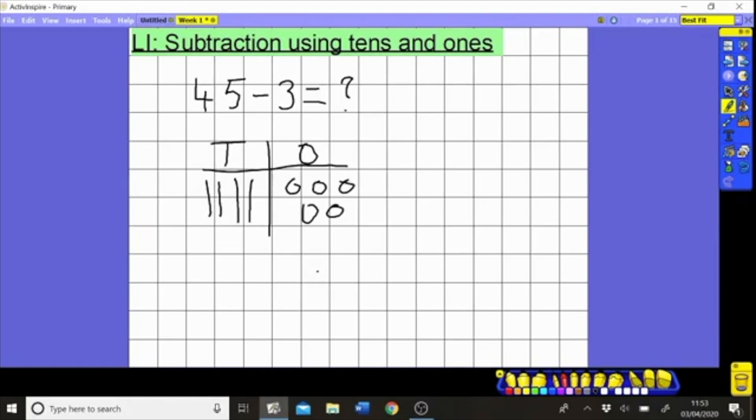Now because three is not greater than five, it is less than five, we can just take away three ones straight away and we just cross them out like this. Then we put a circle around our ones that are left so we know that's what we're counting. This one's nice and easy - we have four tens still and we have two ones, so the answer is forty two.